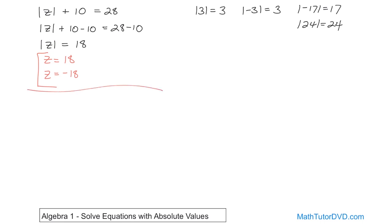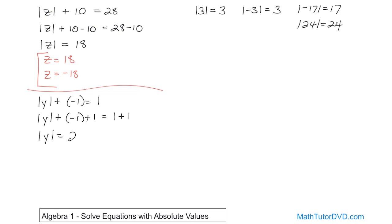Let's solve another problem. Absolute value of y plus negative 1 is equal to 1. We want to get y by himself, so we have this negative 1 here. We're going to add 1 to both sides to get rid of it. On the left-hand side this goes to 0, so you have absolute value of y equals 1 plus 1, which is 2. You've solved for the absolute value of y, so you get two answers: y can be 2, and y can be negative 2. Absolute value of 2 gives 2, and absolute value of negative 2 also gives 2.